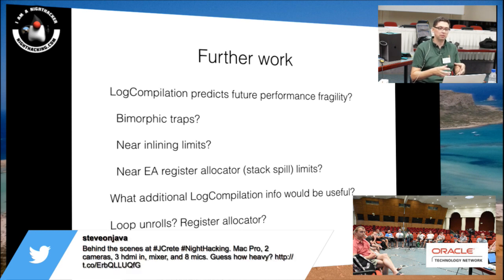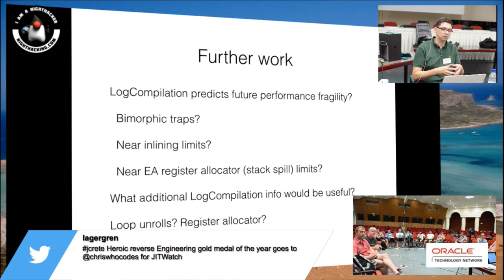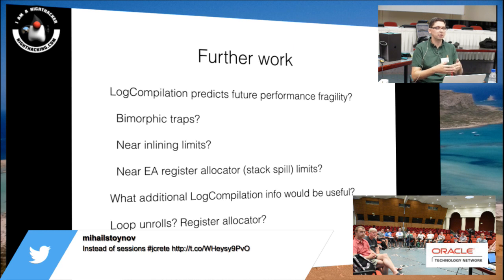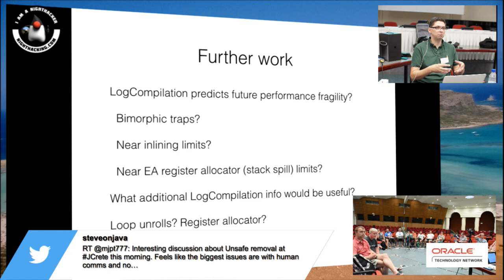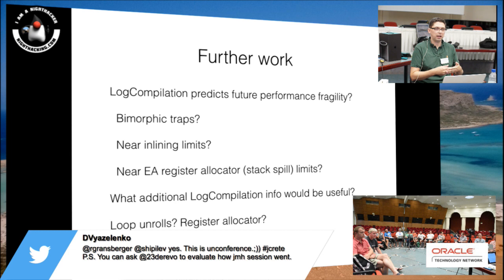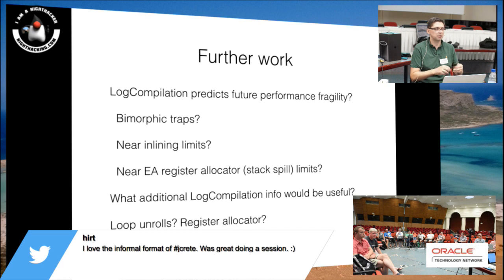I'll do more work on how stack spills work with the register allocator — maybe there's a limit that could be turned into a developer hint. For that to be useful there'd need to be some kind of logging. At the moment, the production VM has no logging of what the register allocator has done. Perhaps there's some way to filter that. Would it be interesting to know how many exploded fields ended up on the stack as a spill? That's an open question.